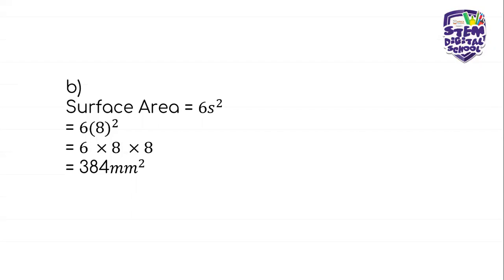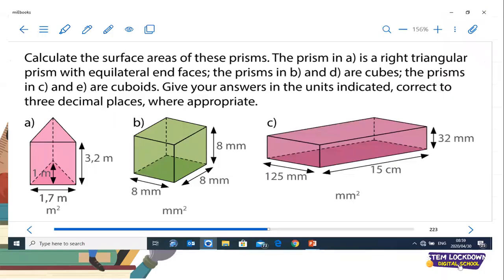We are done with calculating the surface area of the cube. We now have to find a way to calculate the surface area of the cuboid, also known as the rectangular prism. So we need to calculate the surface area of the rectangular prism. We are given the length, breadth, and height, and we can see that the dimensions are different.